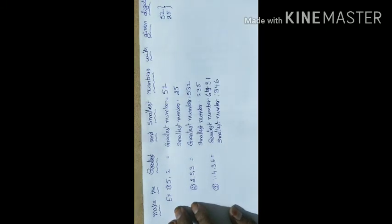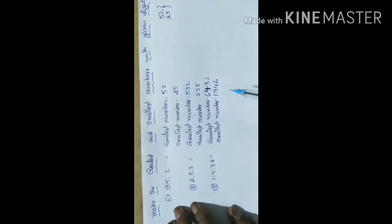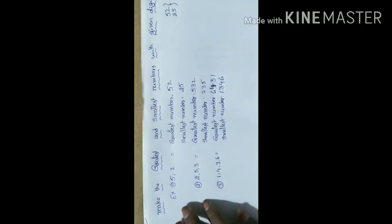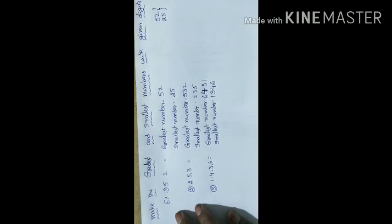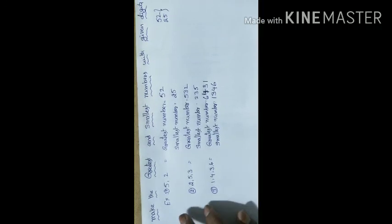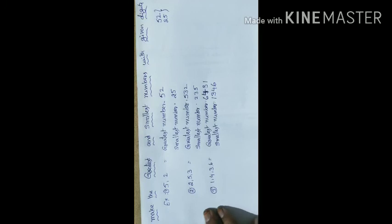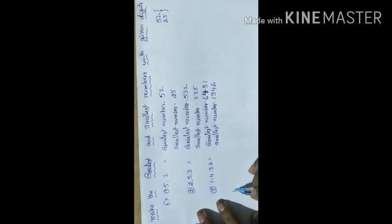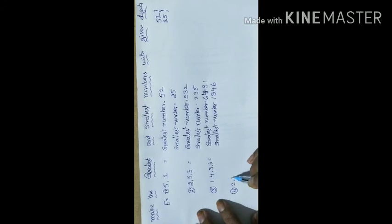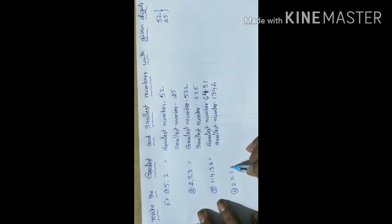1,346 is ascending order. So every greatest number should be in descending order, and every smallest number should be in ascending order. Fourth problem: digits 2, 5, 7, 8, and 6 — this is a five-digit number.